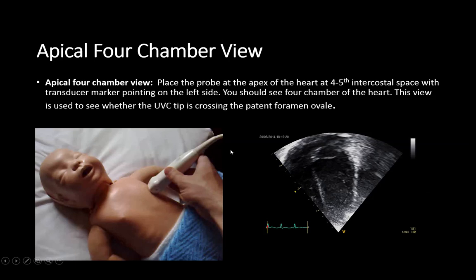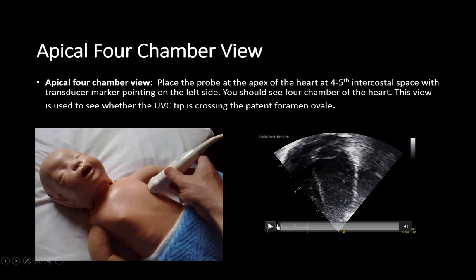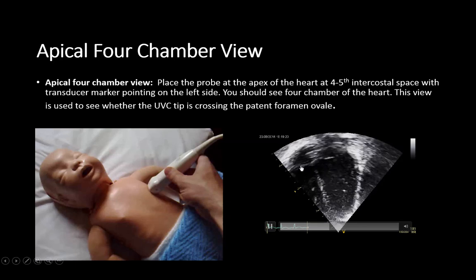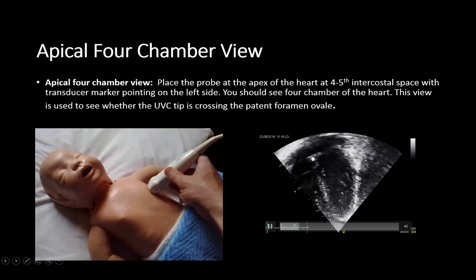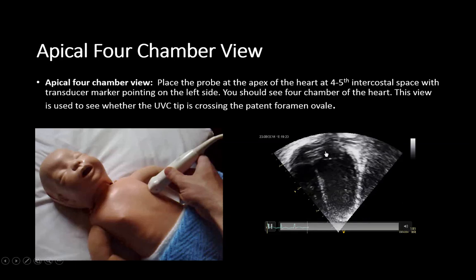The apical four-chamber view is another position used to assess whether the catheter tip is crossing the patent foramen ovale. The transducer is placed at the fourth and fifth intercostal space at the cardiac apex in the mid-clavicular line. From there you can see all four chambers, focusing on the relationship between the right and left atrium. The catheter crossing the inter-atrial septum towards the left atrium can be clearly identified in this view.